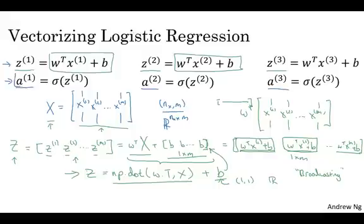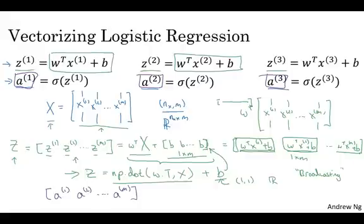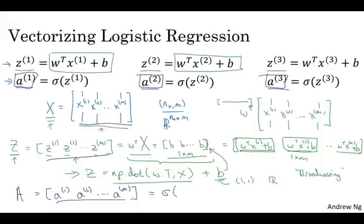How about these values, a, right? What we'd like to do next is find a way to compute a^(1), a^(2), and so on through a^(m), all at the same time. And just as stacking lowercase x's resulted in capital X and stacking means stacking horizontally, lowercase z's resulting capital Z. Stacking lowercase a's is going to result in a new variable which we're going to define as capital A. And in the programming assignment, you see how to implement a vector-valued sigmoid function. So, that the sigmoid function inputs this capital Z as a variable and very efficiently outputs capital A. So, you see the details of that in the programming assignment.